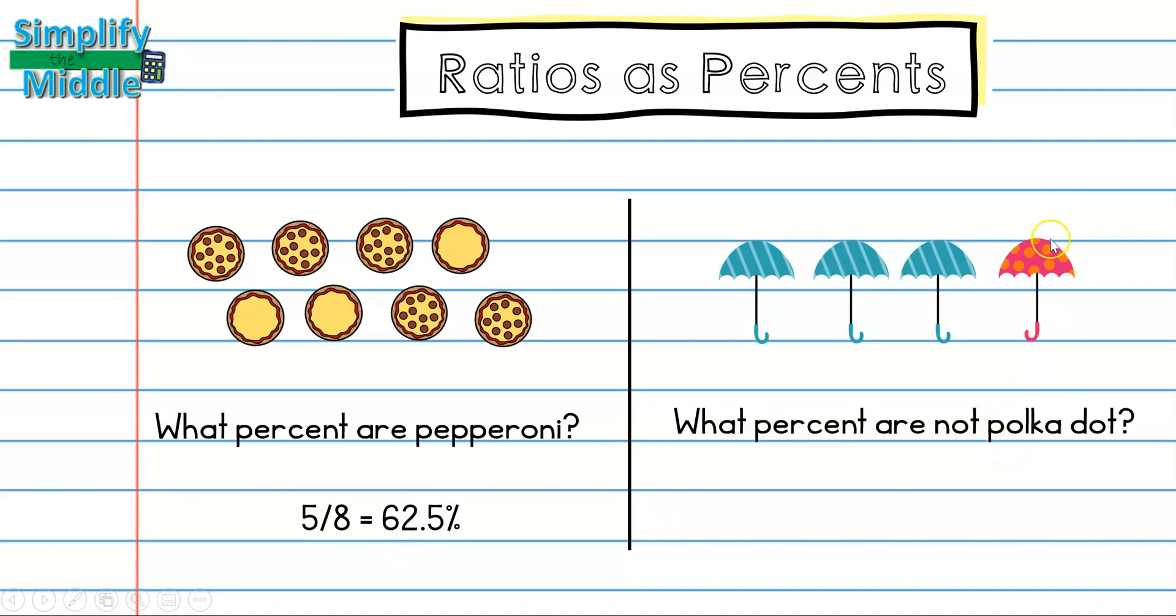On the what percent are not polka dot, because I only have one polka dot, I'm going to look at the ones that are striped. Whenever it tells you that you are not looking for something, it means you're looking for the other object. So I have 3 out of 4 that are striped, which is 75 percent.